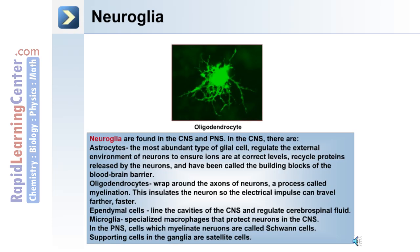Neuroglia cells are found in the central nervous system and the peripheral nervous system. In the CNS, there are astrocytes, oligodendrocytes, and ependymal cells. Astrocytes are the most abundant; they regulate the external environment of the neurons to ensure ions are at correct levels, recycle proteins, and have been called the building blocks of the blood-brain barrier. Oligodendrocytes wrap around the axons of neurons and produce myelination. Ependymal cells line the cavities of the central nervous system and regulate cerebrospinal fluid. Microglia are specialized macrophages that protect neurons in the central nervous system.